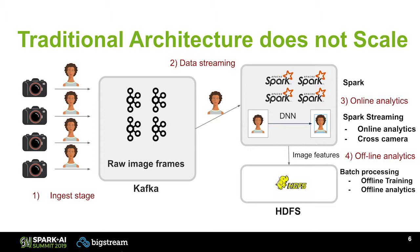Once your data reaches your computational cluster like Spark, Spark actually decodes your Kafka messages, extracts your frames, and applies some online analytics such as anomaly detection or cross-camera re-identification of people in the area coming from different cameras, or detection and tracking of movement of people. We have seen many talks in today and yesterday's sessions about all of these use cases.